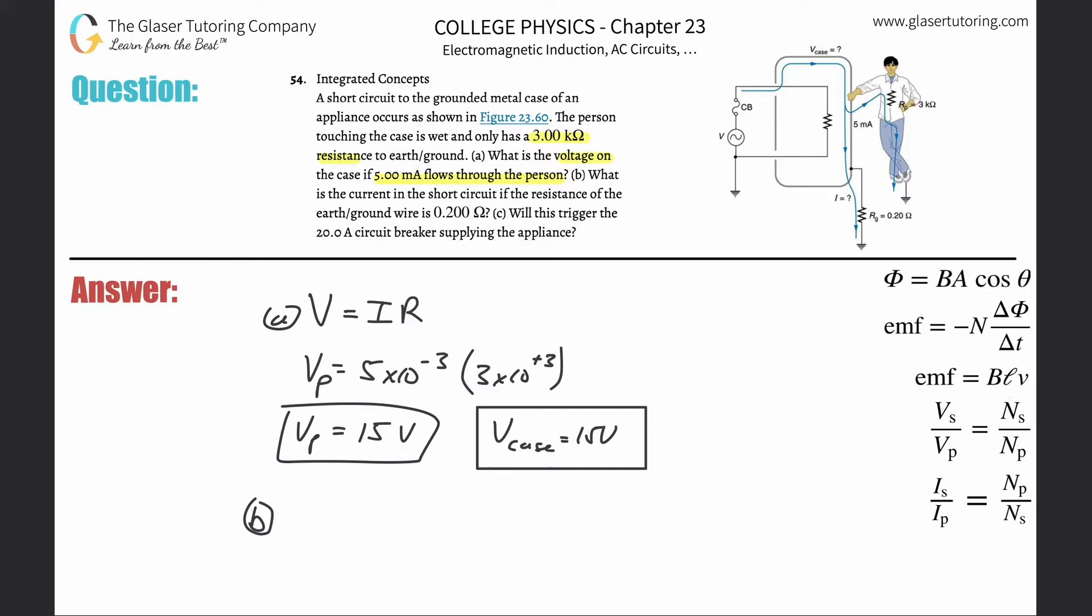Now letter b then says, what is the current in the short circuit if the resistance of the earth ground wire is 0.2 ohms? Okay, so now it wants to know the current, and by the way, the current is not constant.